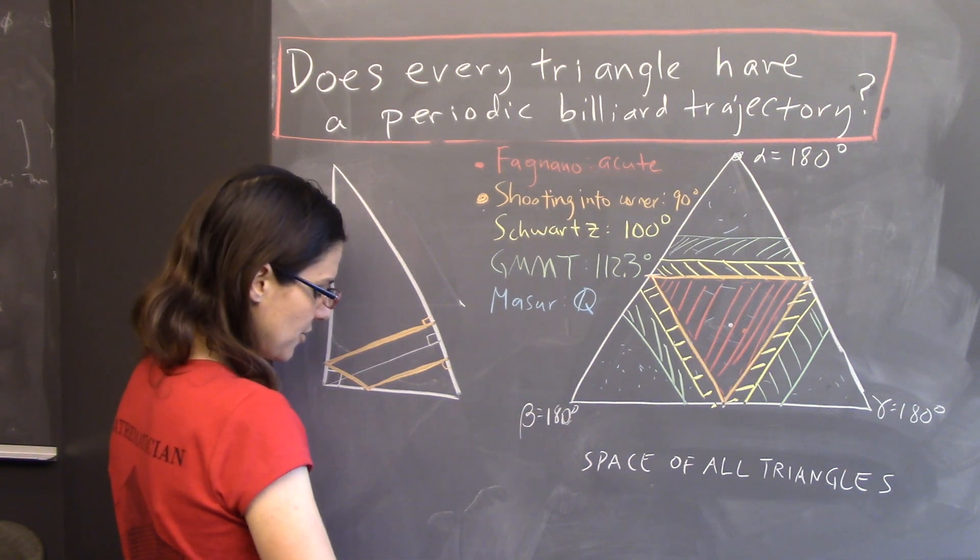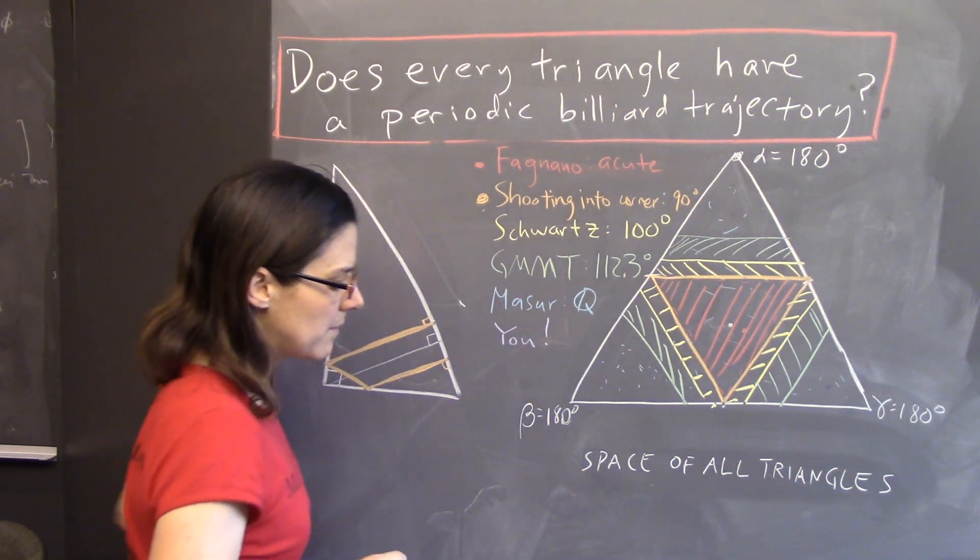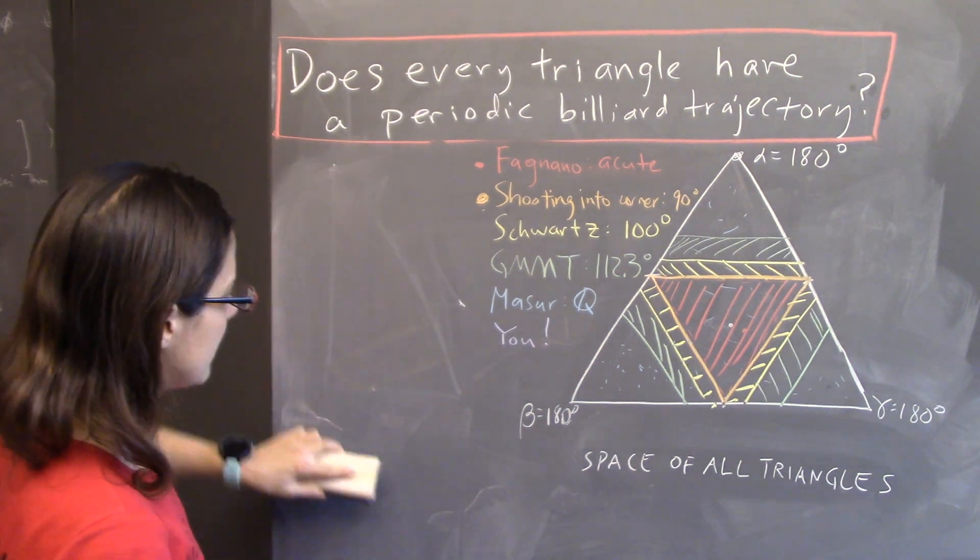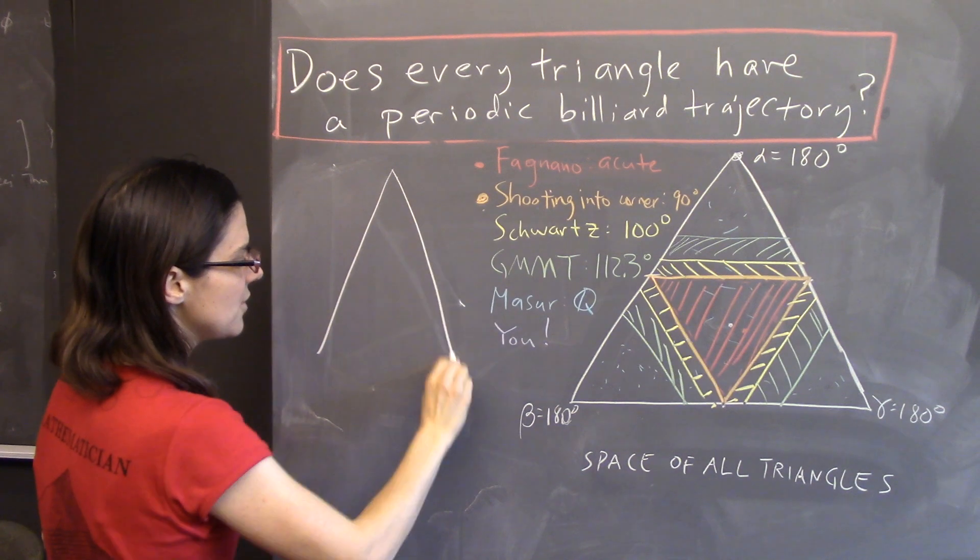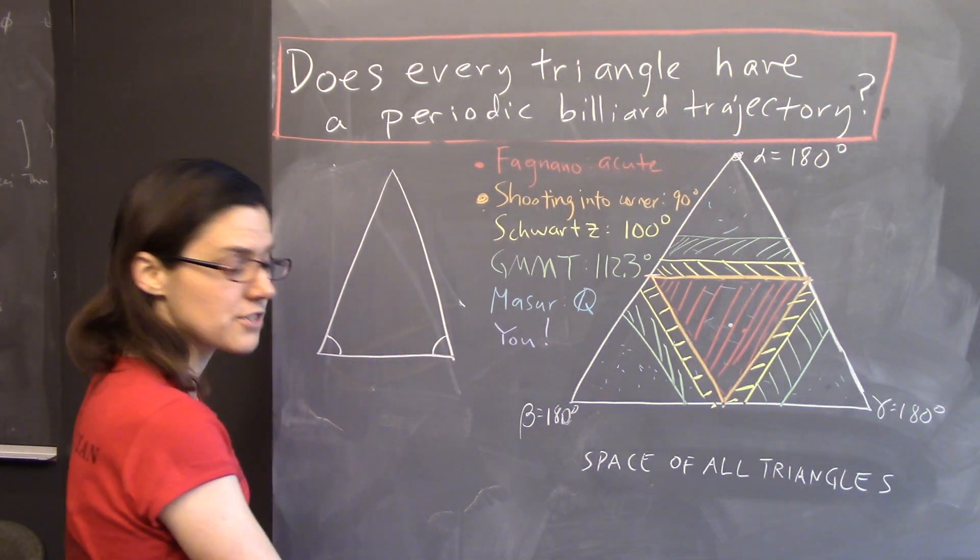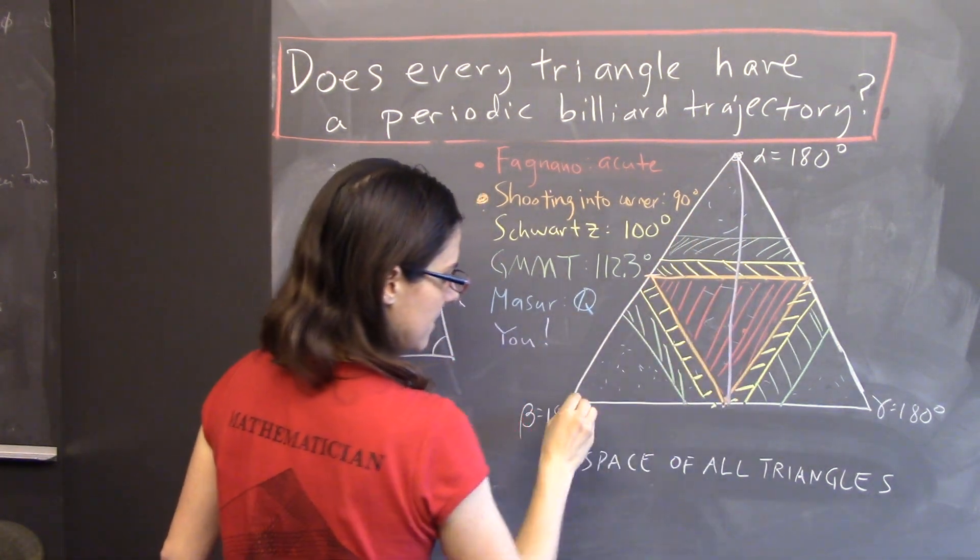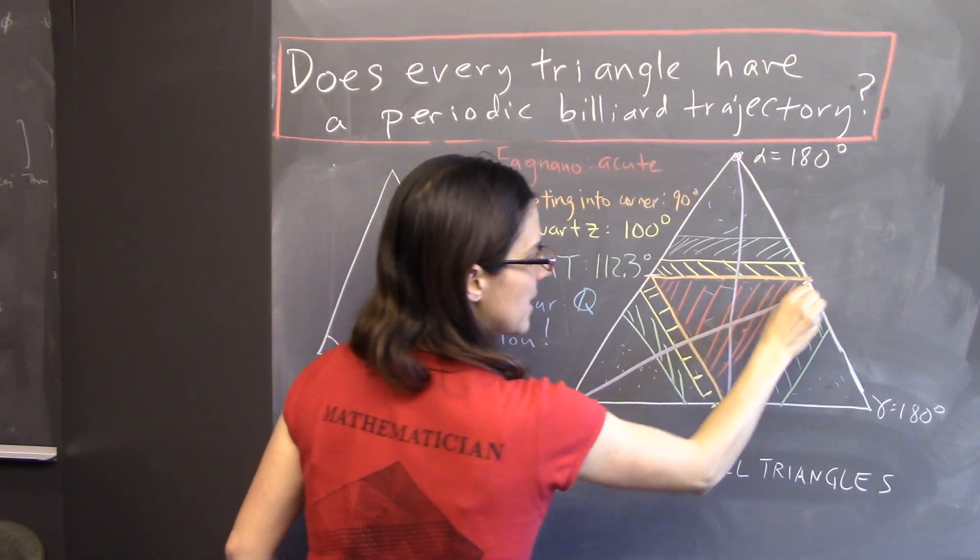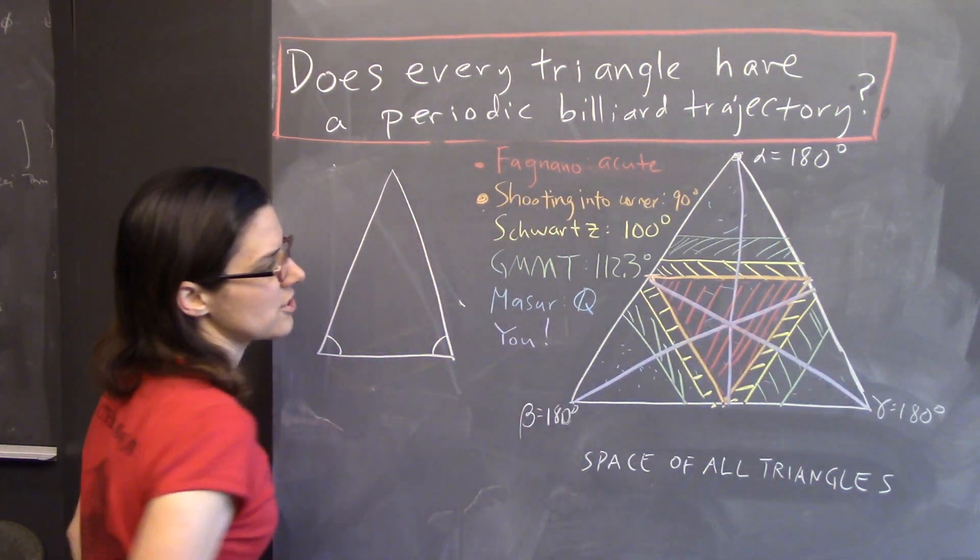So, there's still room for you to prove more things. Here's a warm-up problem. How about if you had an isosceles triangle? So, a triangle that has two equal angles. Can you come up with a construction that gives a periodic billiard trajectory for that? Those are represented by these lines here. And you can find a nice construction that gives that.